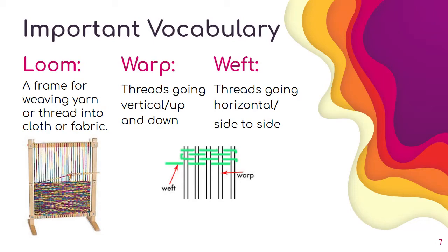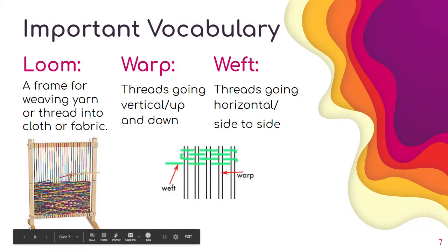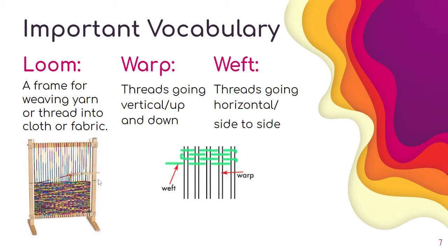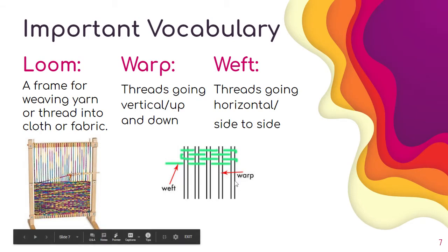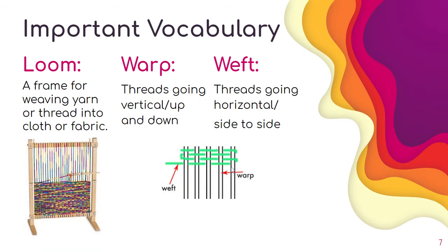Some important vocabulary for you to know. You need to know about a loom, and this can take many forms — for our project it's actually going to be a cup. Then there are threads: typically some that go up and down called the warp, and the weaving is usually done with yarn or threads across those warp threads, and that is called the weft.